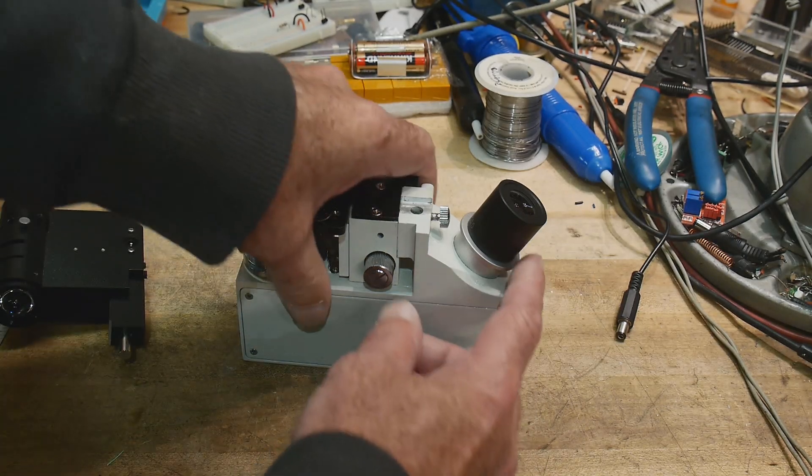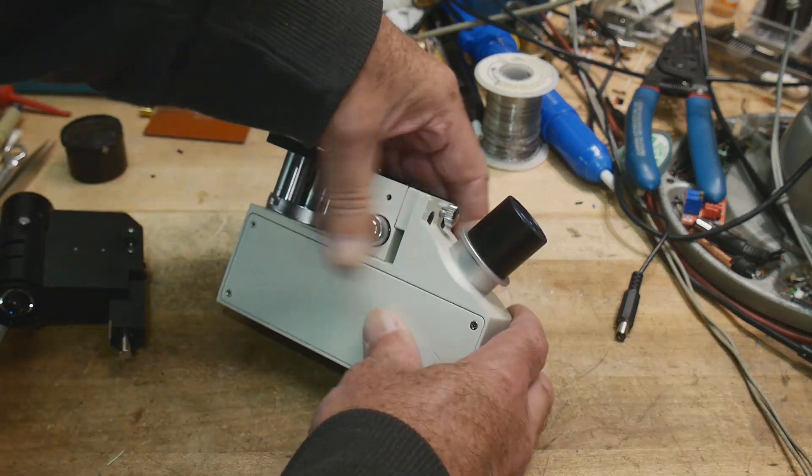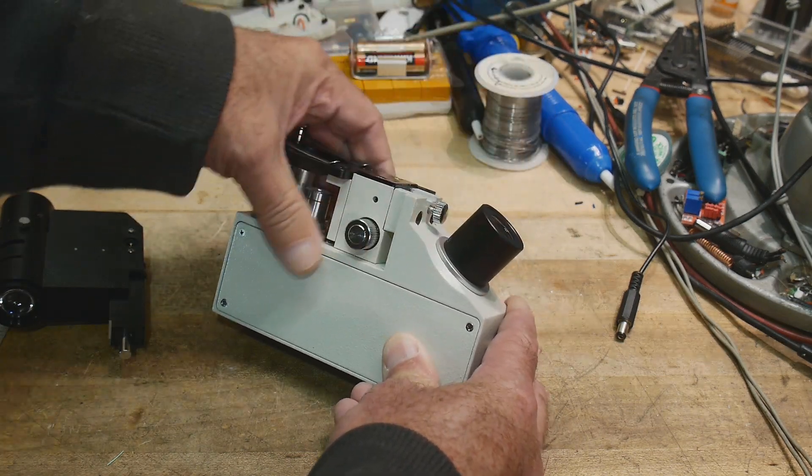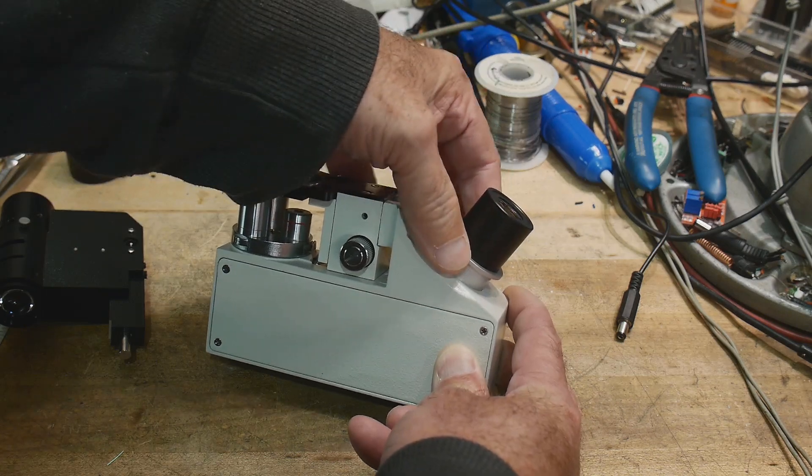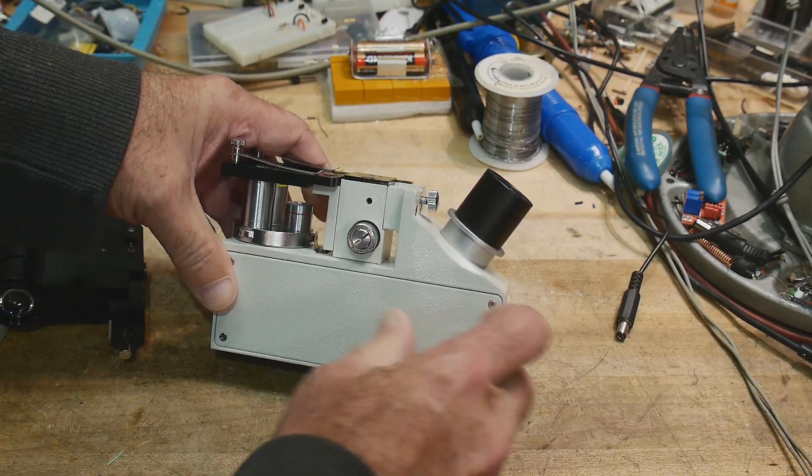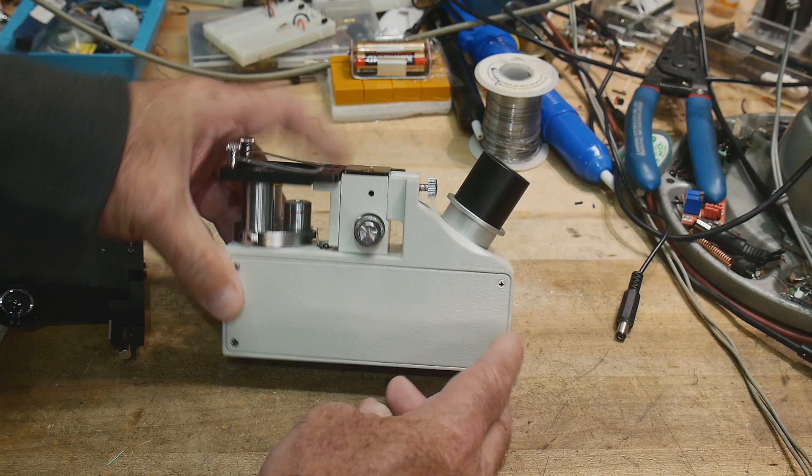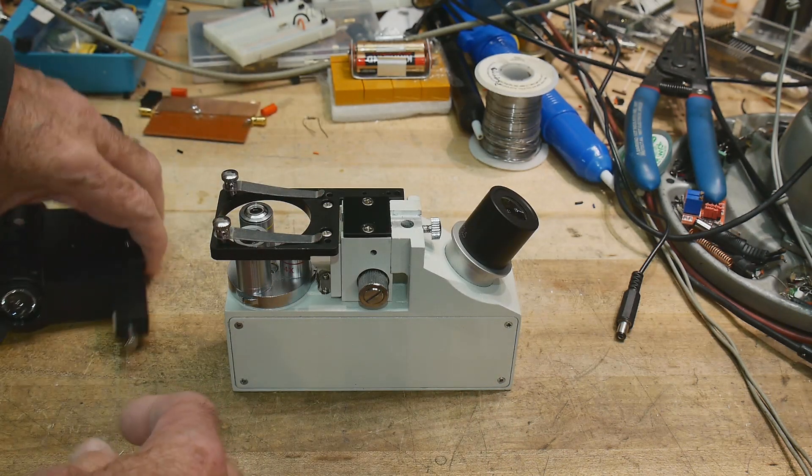It has an objective over here, and to make it even smaller you can retract that and push it down a little bit. When you use it, you pull it up and rotate it and it locks in place. That's kind of cute. There's a focus mechanism here and then there's this condenser.